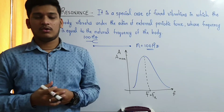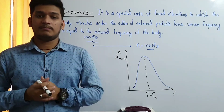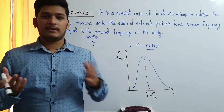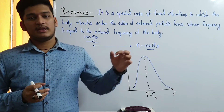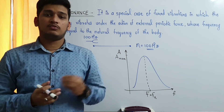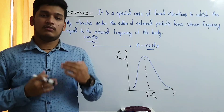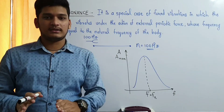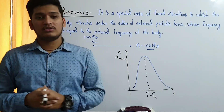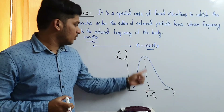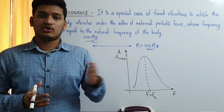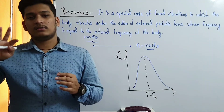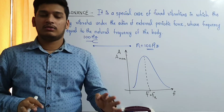When soldiers are walking across suspended bridges, they are asked to break their march. This is because of resonance — if they march in step, the periodic force of their synchronized footsteps can match the natural frequency of the bridge. If resonance happens, the bridge oscillations can grow to maximum amplitude and there is a chance the bridge will break.